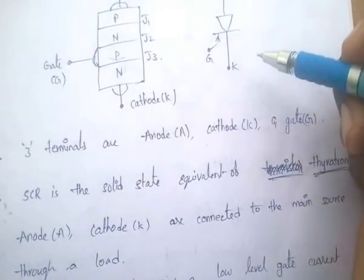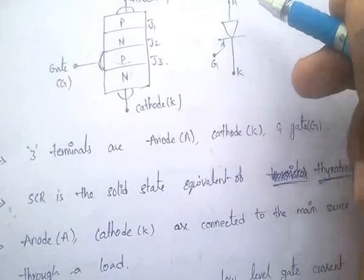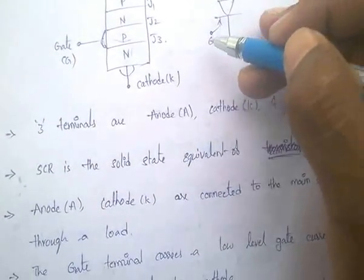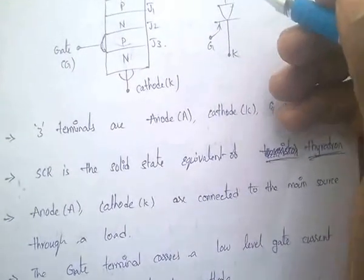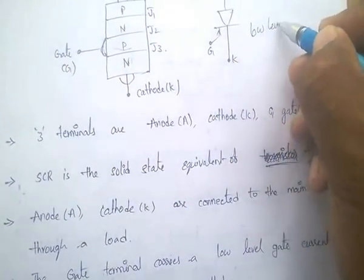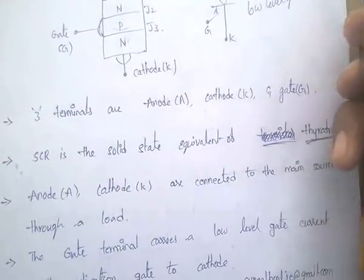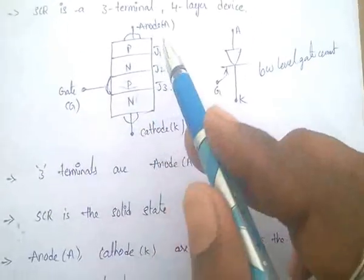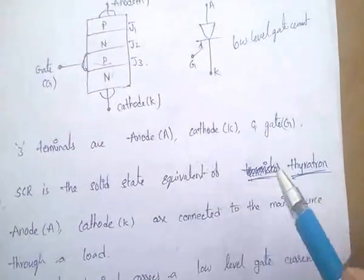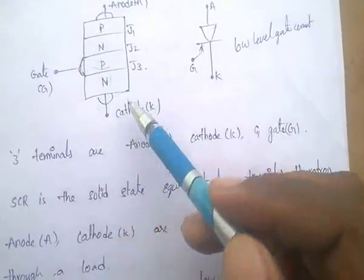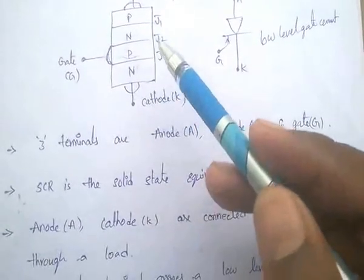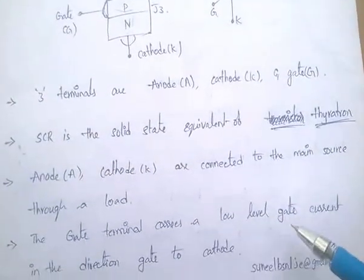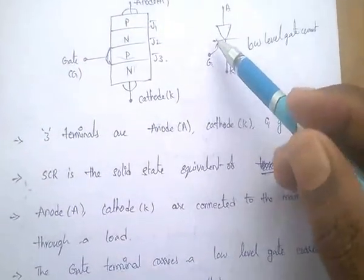The anode and cathode are connected to the main source through a load. The gate terminal carries a low-level gate current in the direction gate to cathode. SCR is the solid-state equivalent of a thyratron tube.